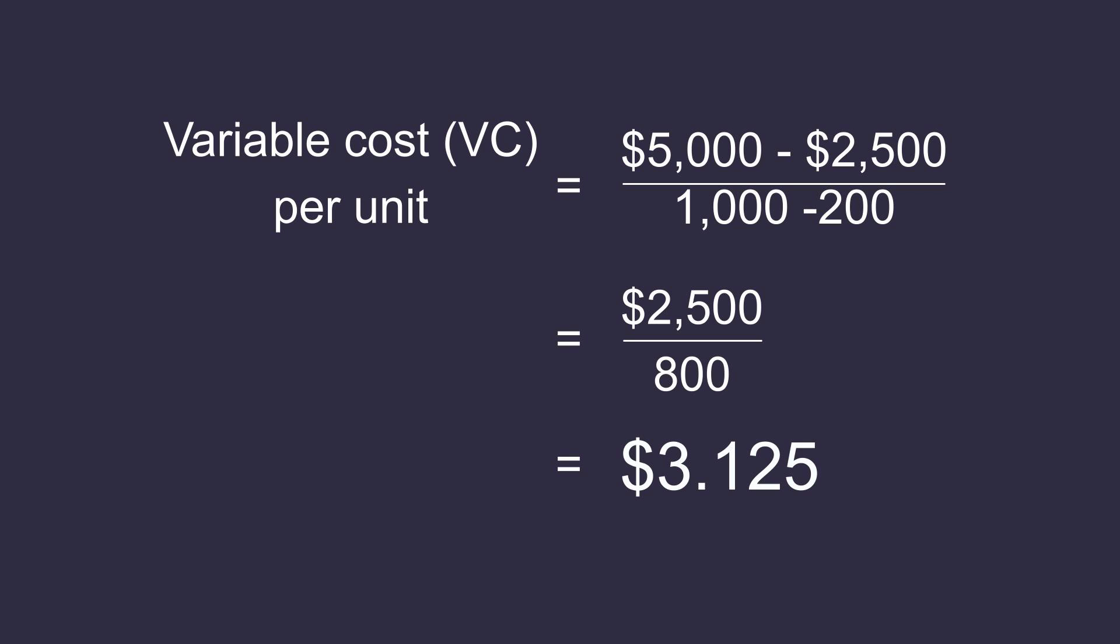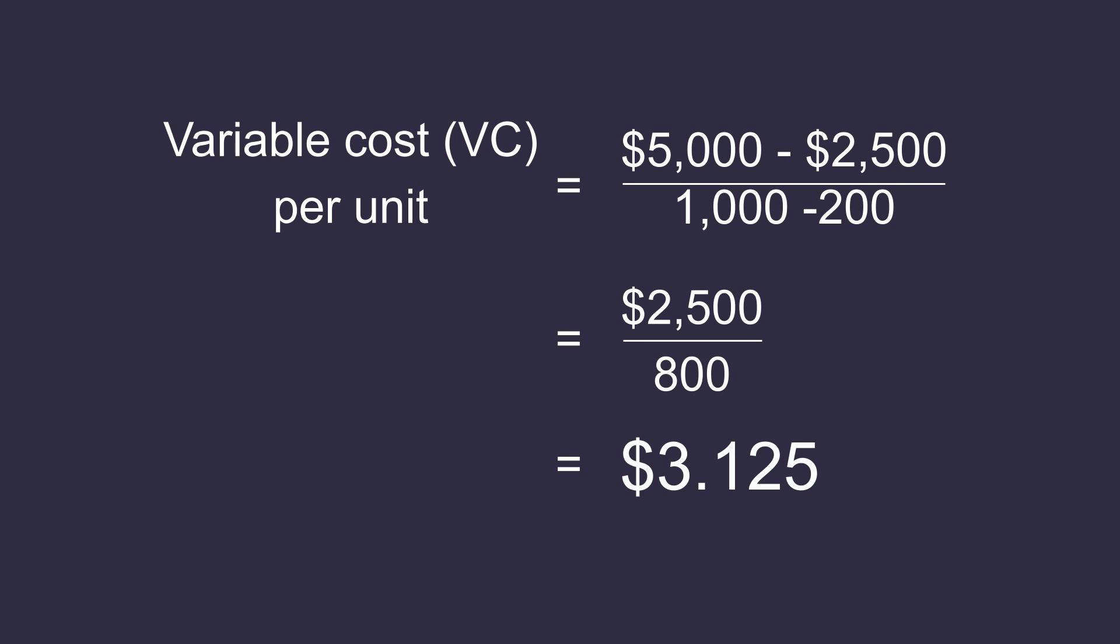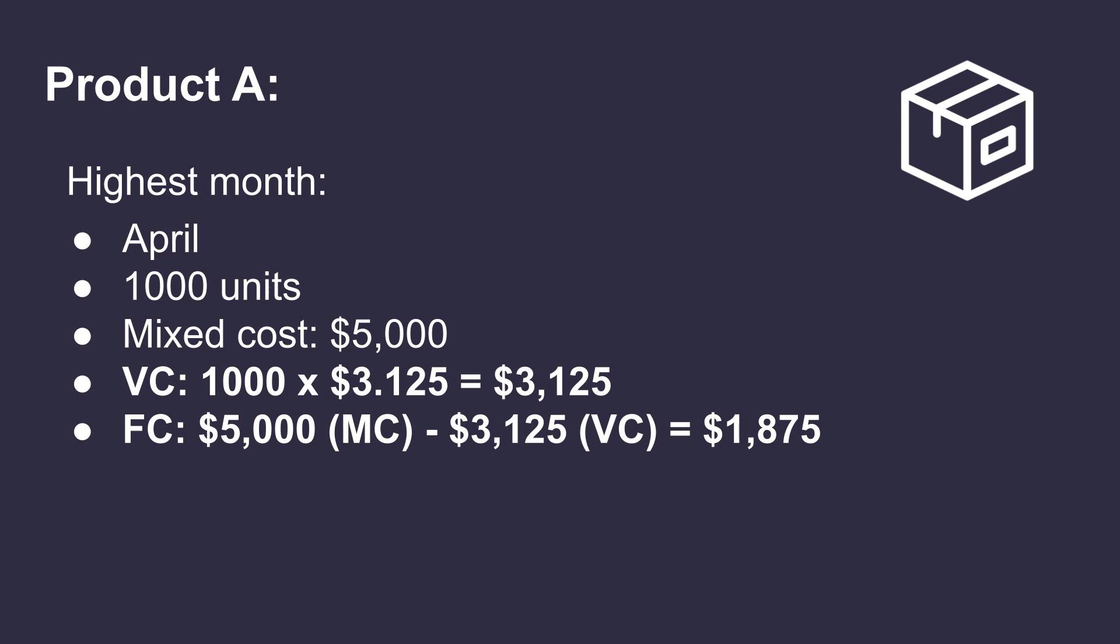Now, if we take the variable cost per unit and multiply it with the total number of units produced every month, we will have the total variable cost for that month. The rest will be fixed costs. Let's plug in the figures for the month of April. We've produced 1,000 units. The variable cost for the month of April will be 1,000 units times the variable cost per unit, which is $3.12. Therefore, $5,000, which is the mixed cost, minus $3,125, which is the variable cost, will give you a fixed cost of $1,875.